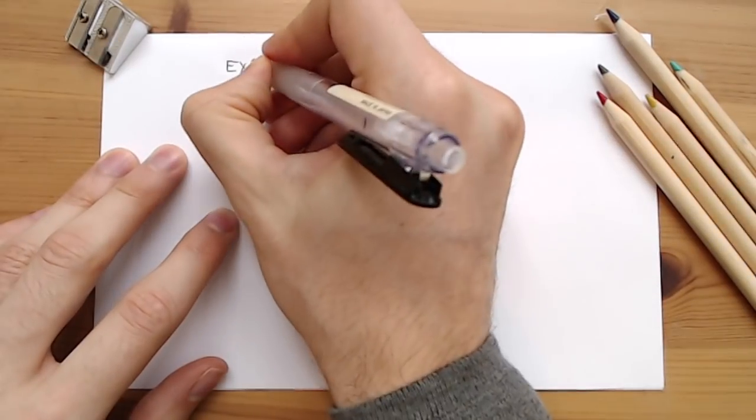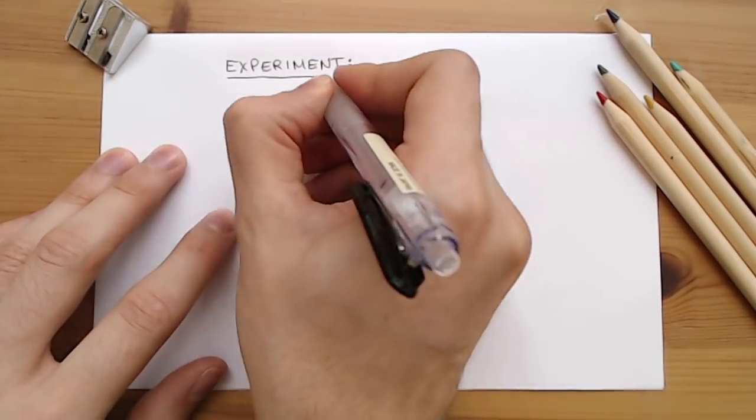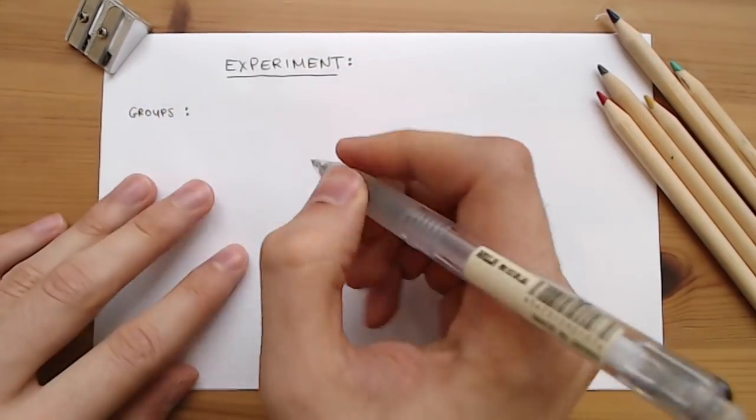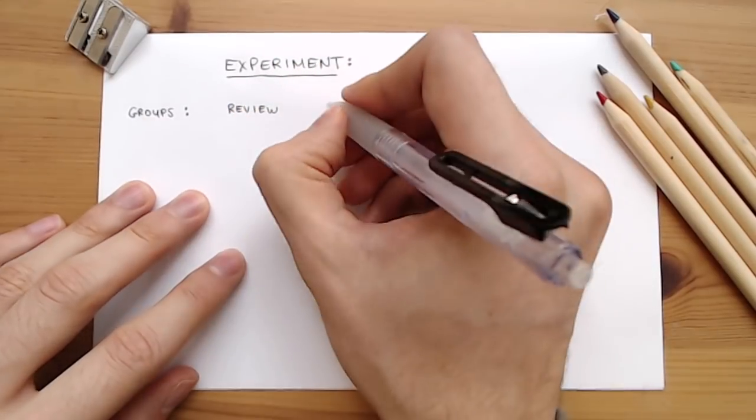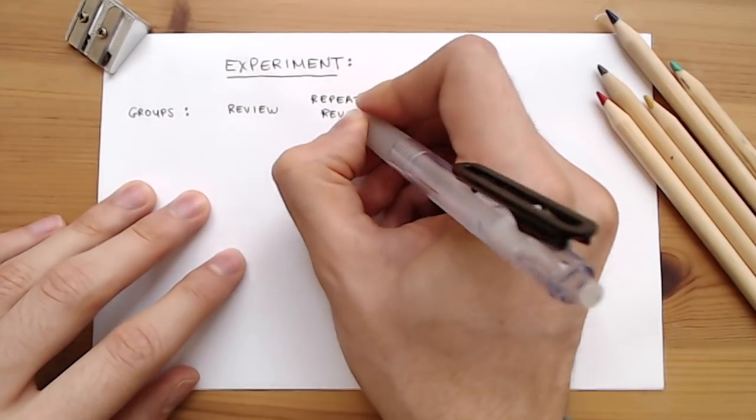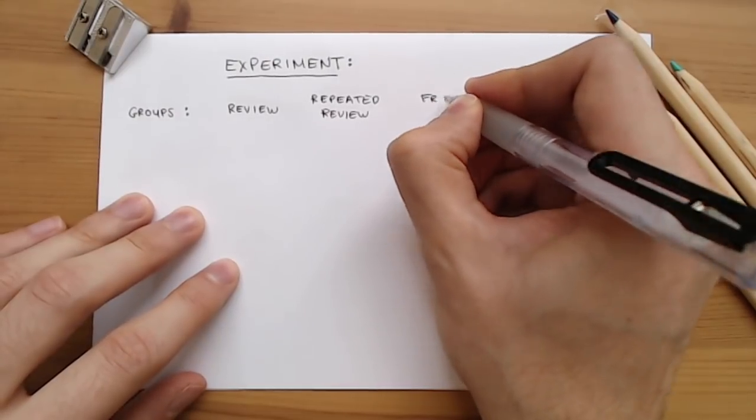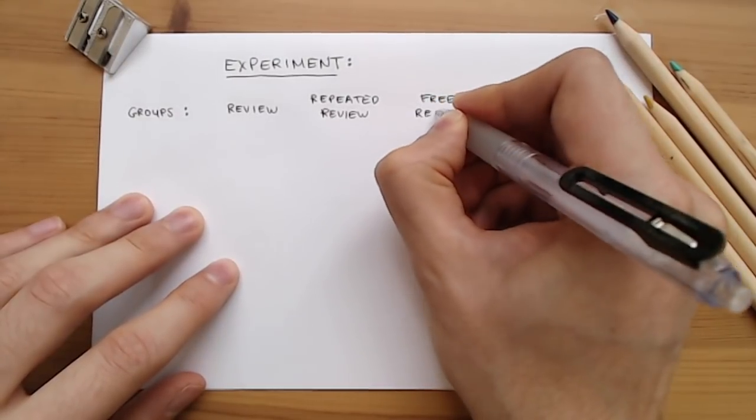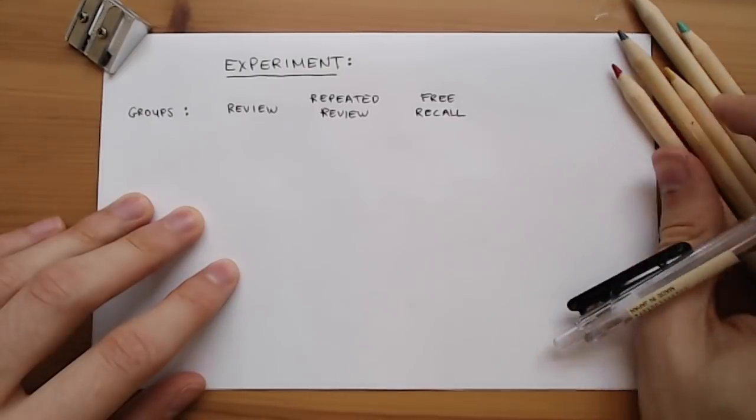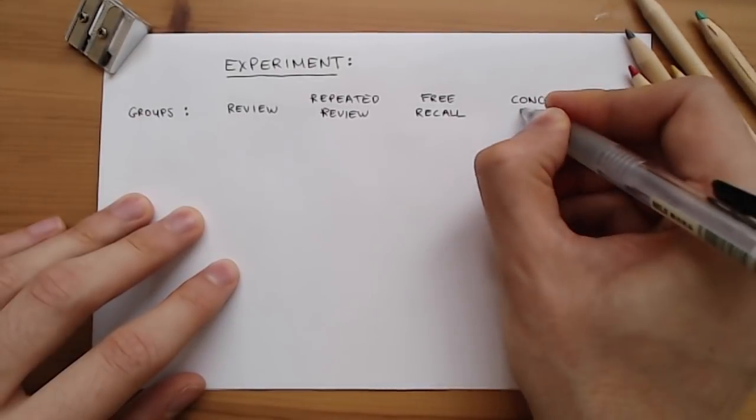So consider one experiment by psychologists Jeffrey Karpicke and Janelle Blunt. In it, they had students in four groups: reviewing the information once, repeatedly reviewing the information, free recall, which means that you try to remember as much as you can without looking at the text, and creating a concept map, or also known as a mind map.